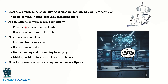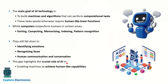AI applications perform specialized tasks by processing large amounts of data, recognizing patterns, and learning from experience. As soon as new data is given, AI learns and understands things. AI systems are also capable of recognizing objects, understanding and responding to language, and making decisions to solve real-world problems. These are the capabilities we say AI systems possess.